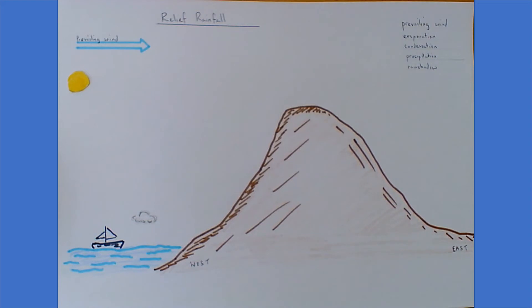Solar energy from the sun causes some of the ocean to evaporate and start to rise. Evaporation is when the water droplets turn from a liquid into a gas. The moist warm air is pushed up by the prevailing wind towards the land.